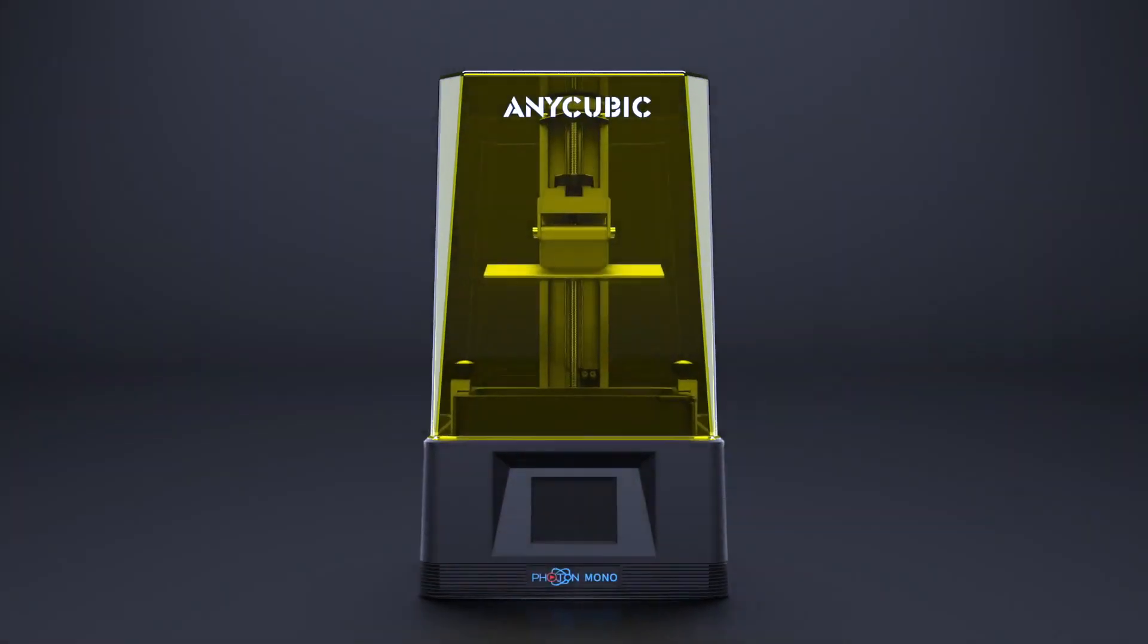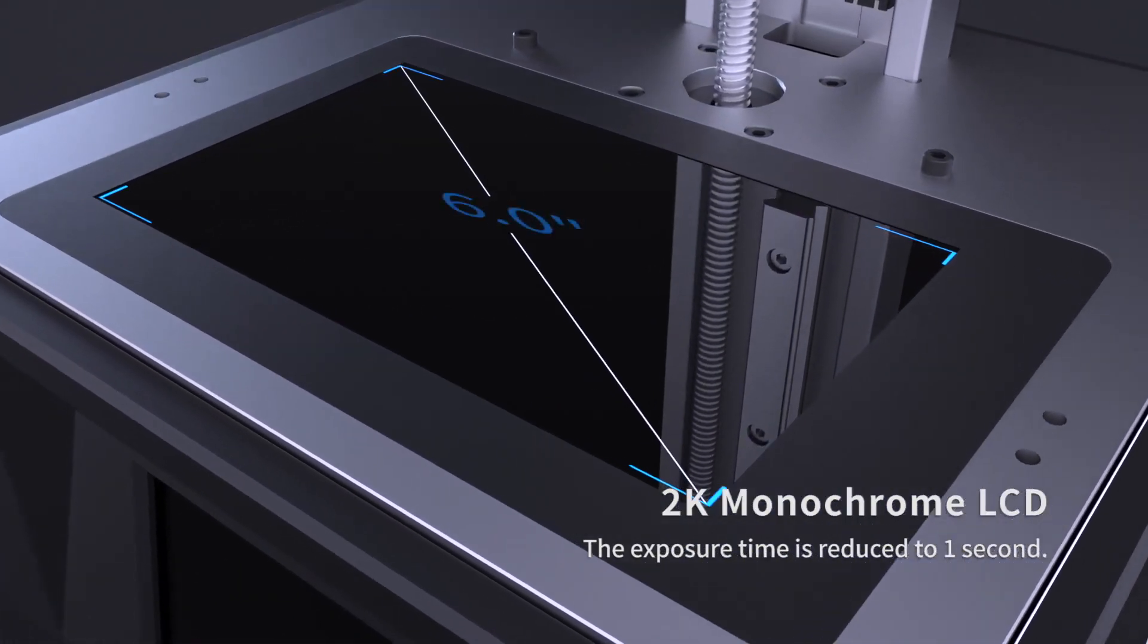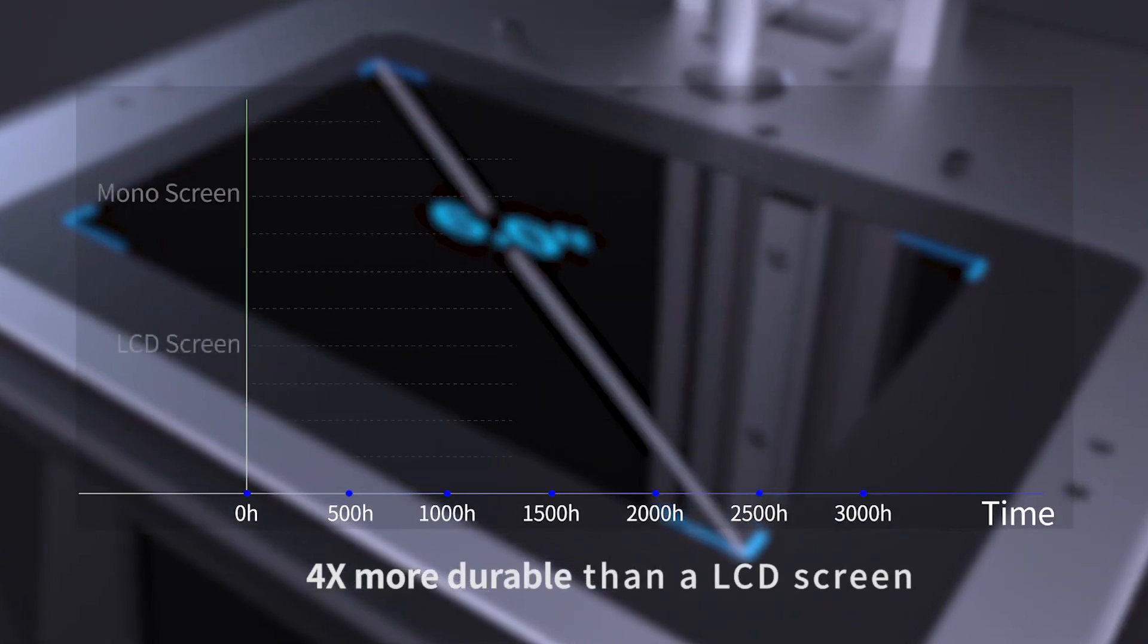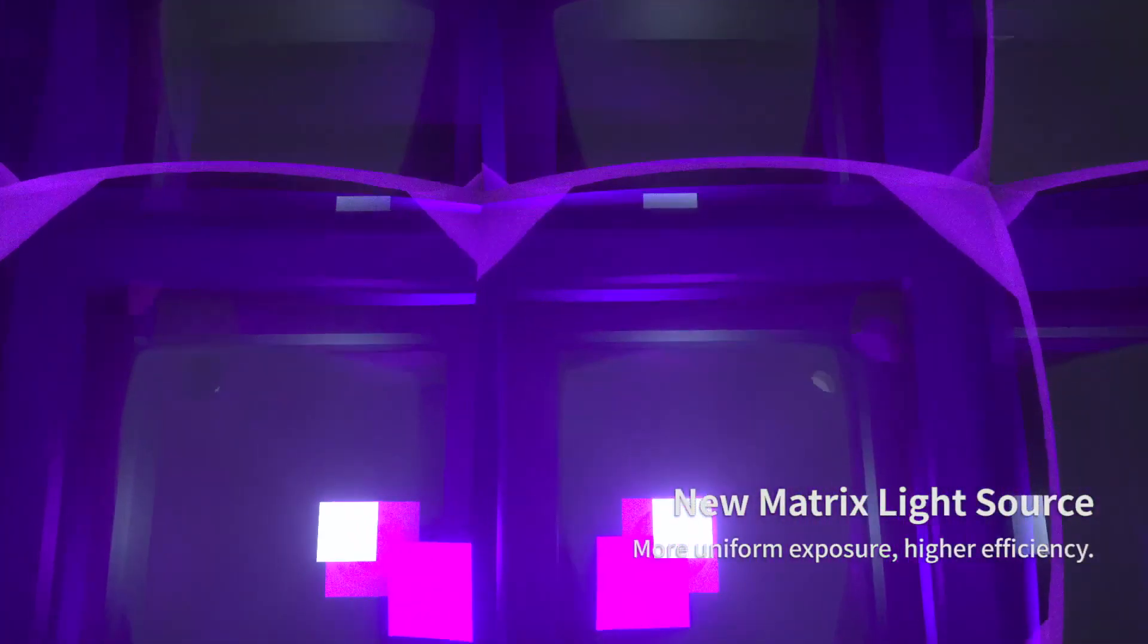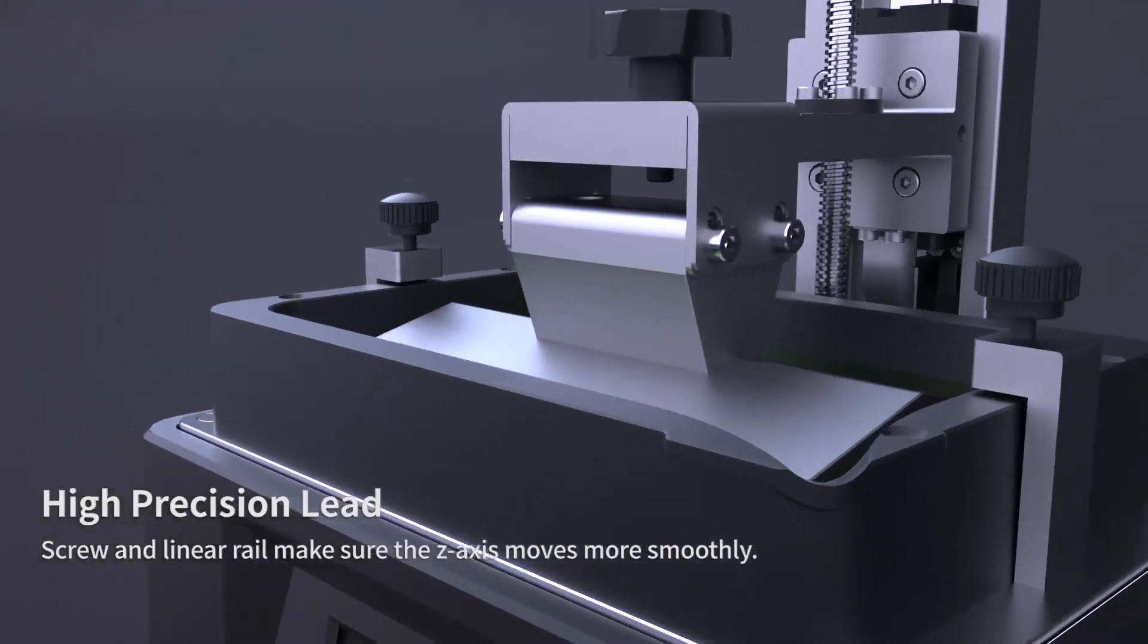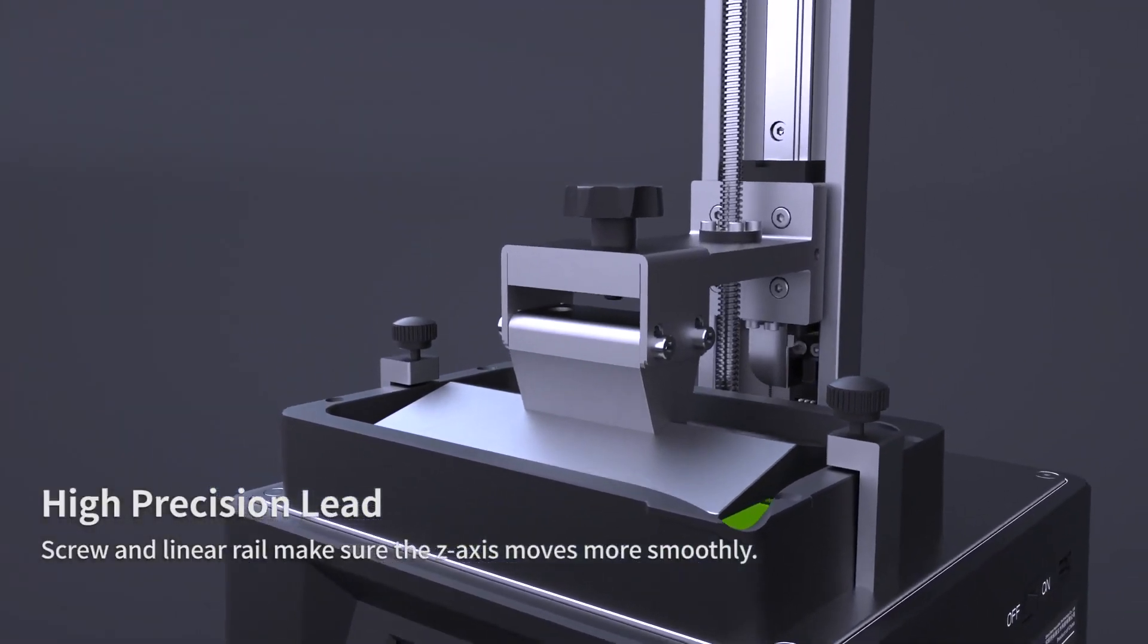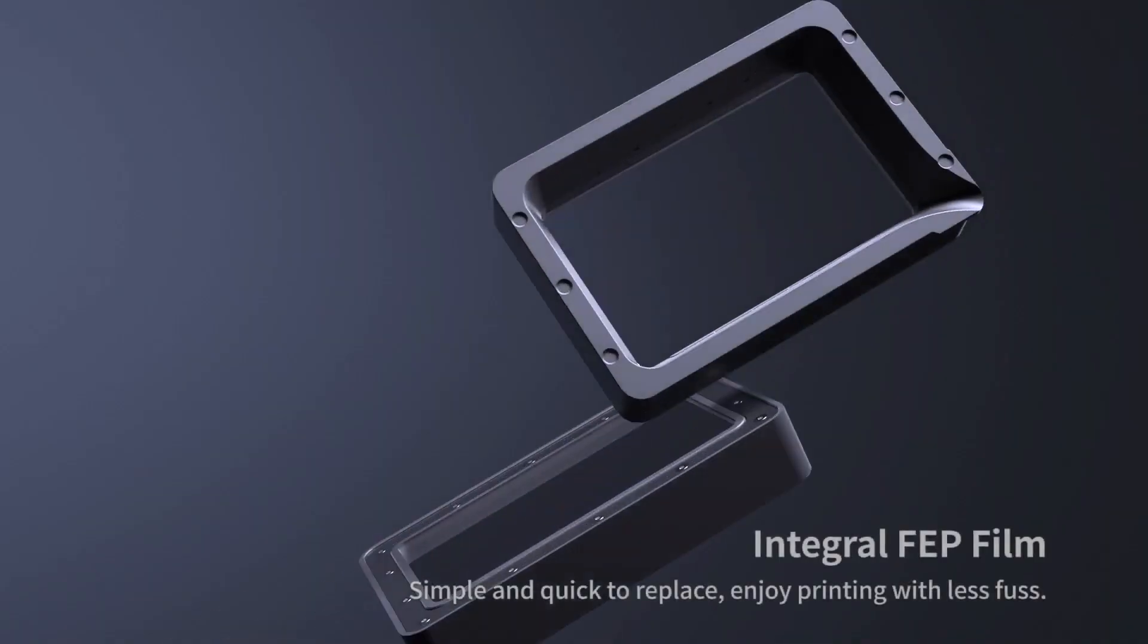For number one, the Anycubic Photon Mono printer. This printer has a 2K resolution monochrome LCD display. It has a build volume of 130x78x165mm and has a selling price of $250.